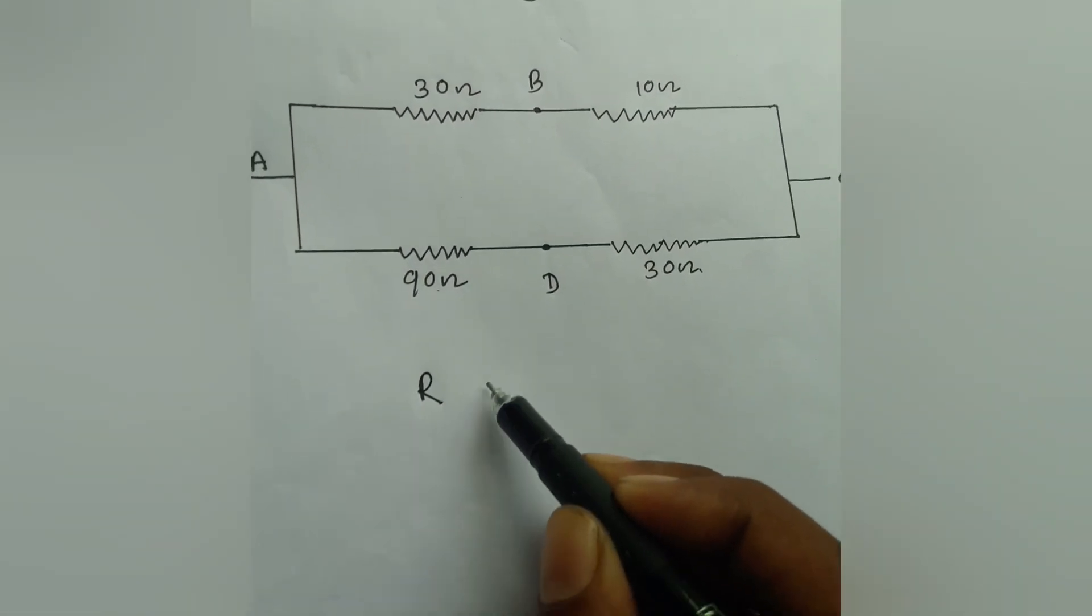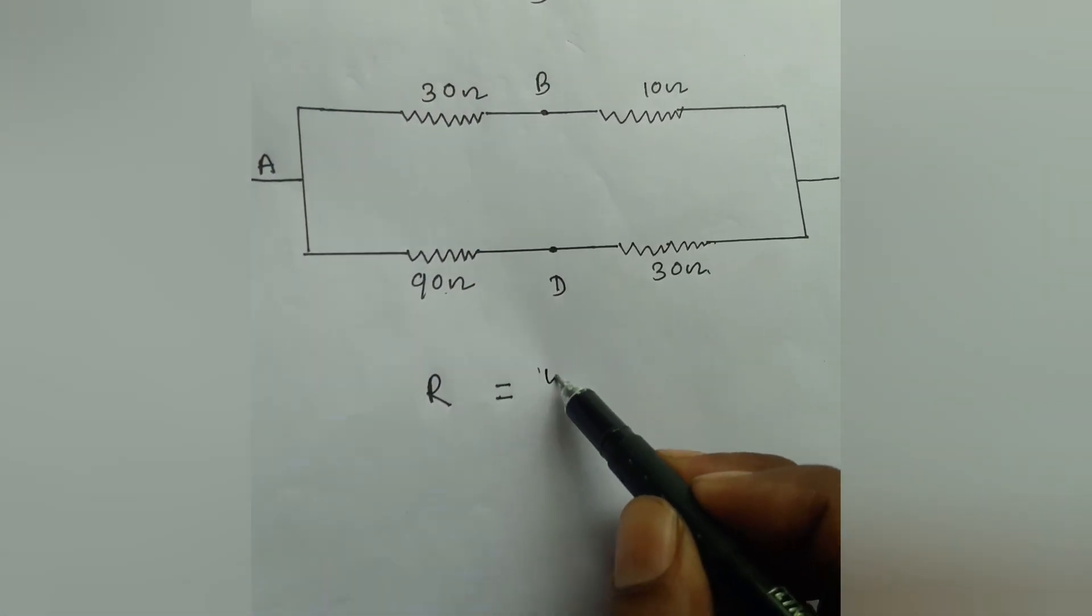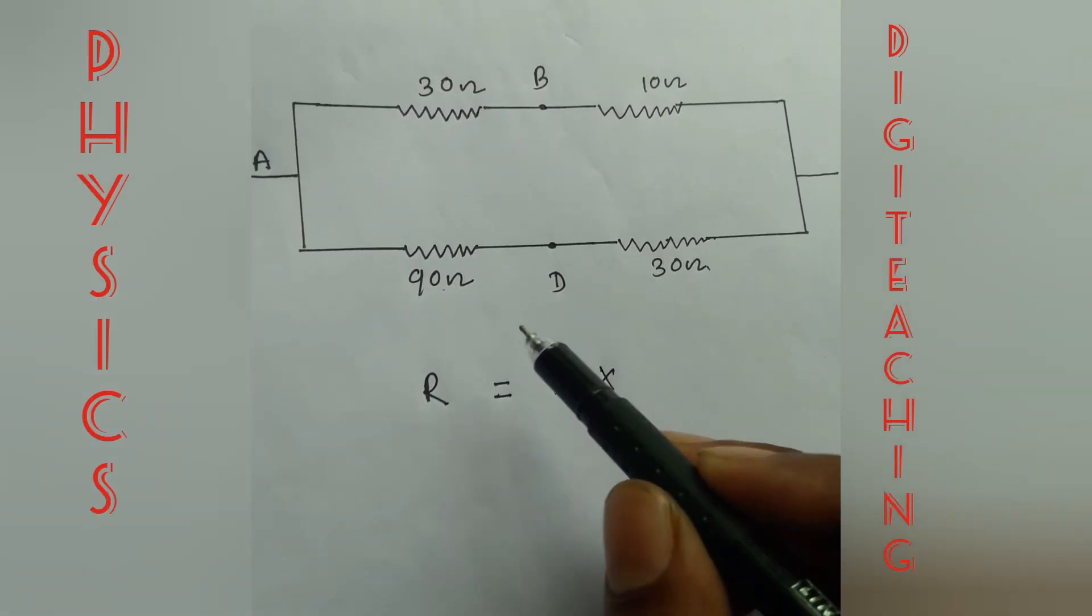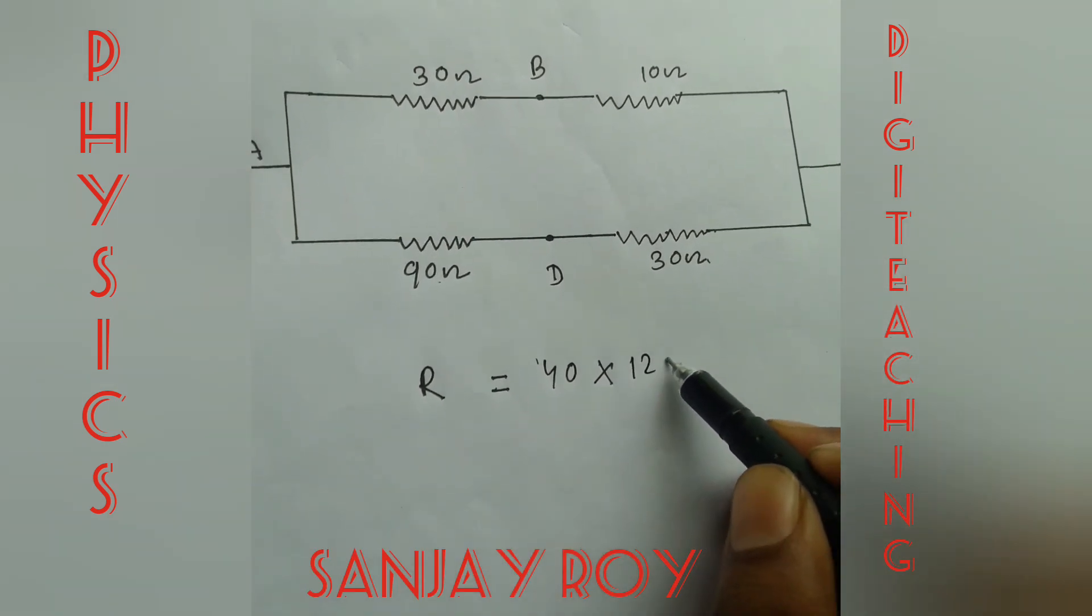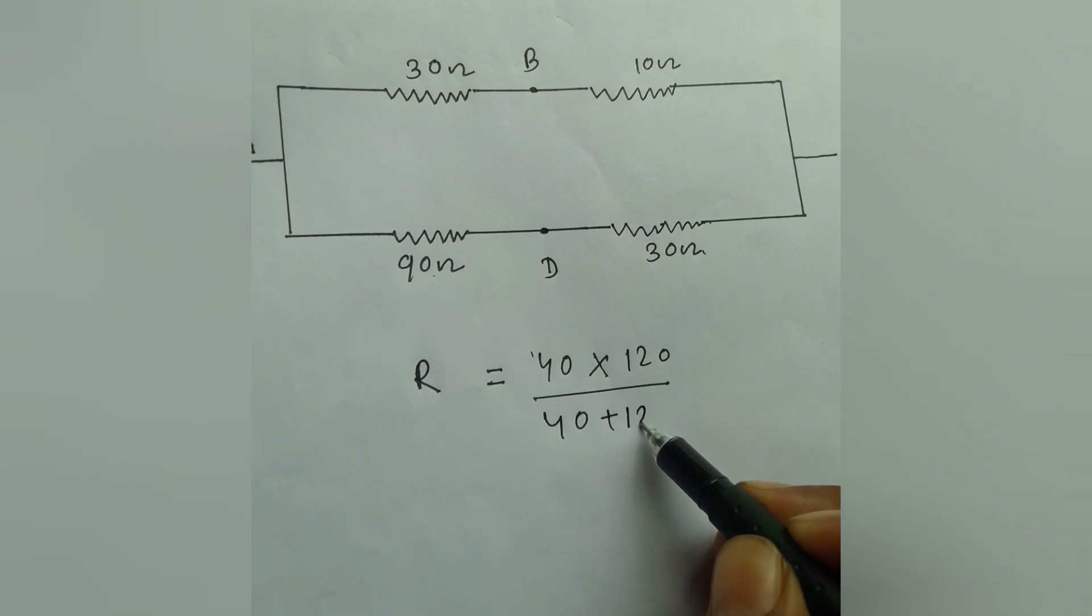And the resultant resistance is equal to 40 into 120 divided by 40 plus 120.